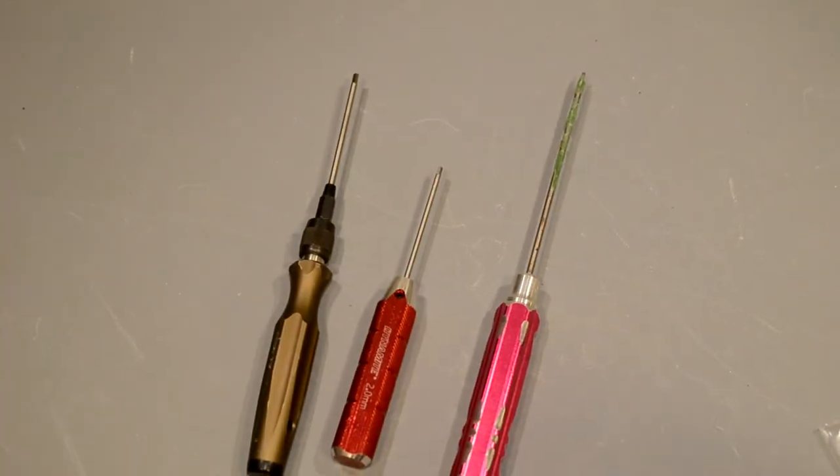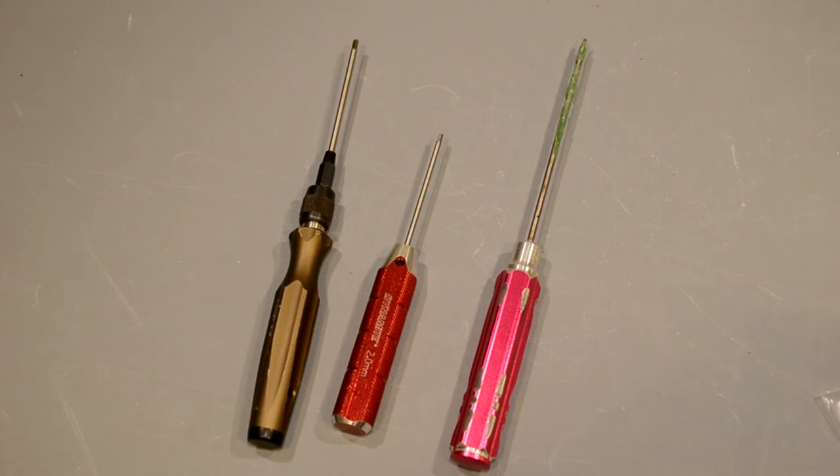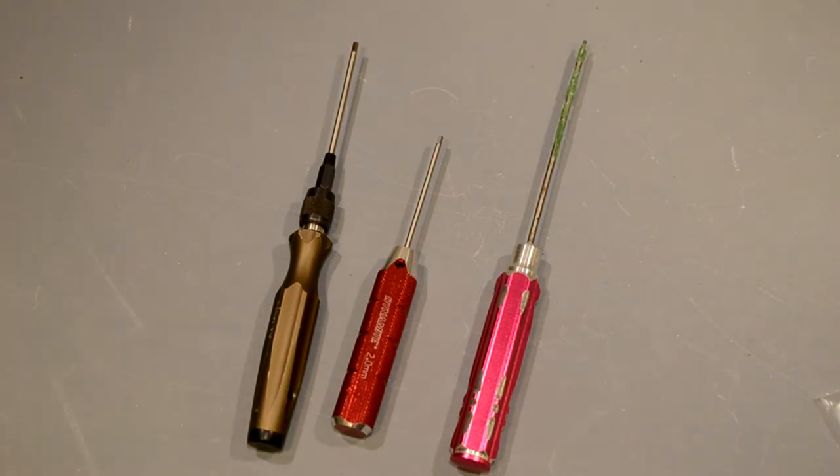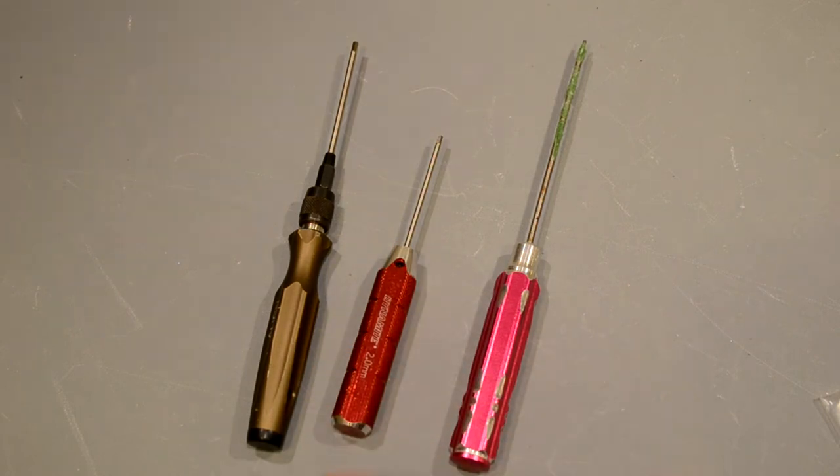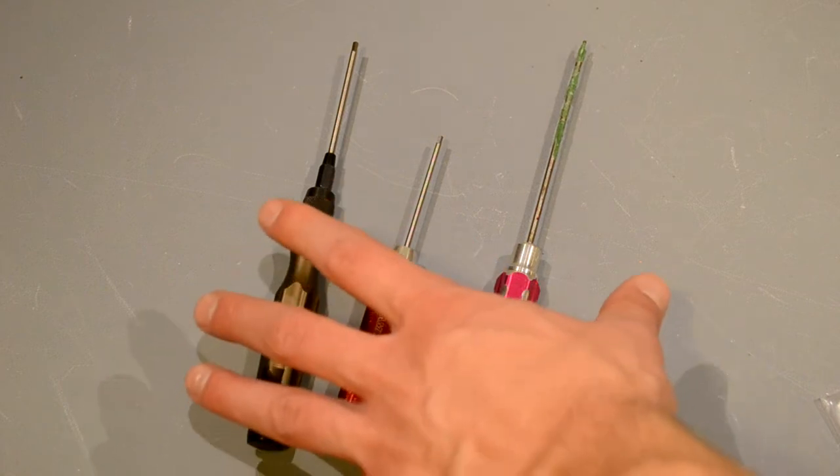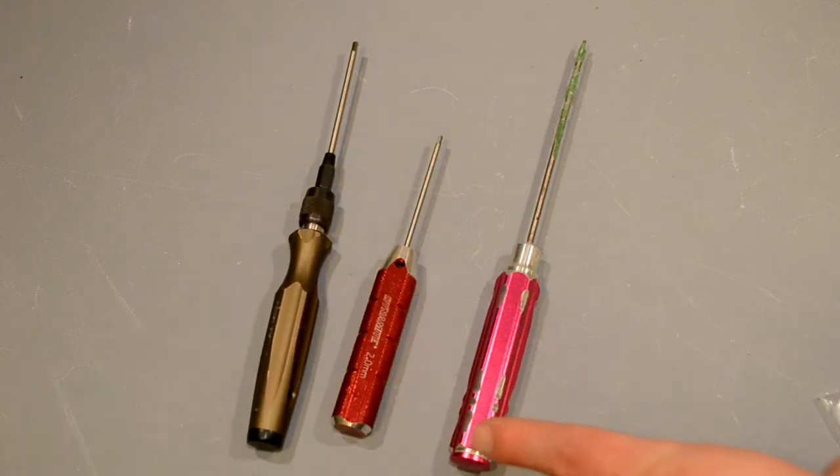All right, guys. So, it's worth mentioning the three sizes of hex drivers that we need before we start. We need a three millimeter, which is this one. We need a two millimeter, and we need a 1.5 millimeter. I have yet to run into any screws on this copter that use different size wrenches. If I do, I will let you guys know as soon as I find them, but it looks like the whole vehicle is contained to three screw sizes, which is really great.